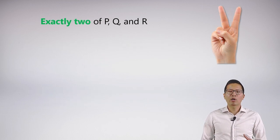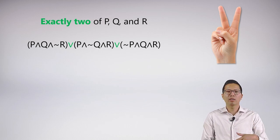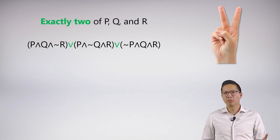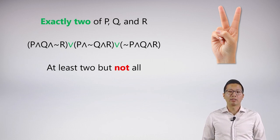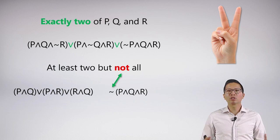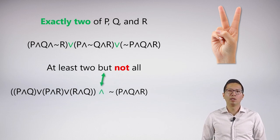For exactly two, we do the same thing. The explicit cases are: P and Q, or P and R, or Q and R — put ORs in between. We don't have to say 'and not all of them,' but you could. An interesting thing about exactly two is it also has a short, efficient symbolization: exactly two is just 'at least two, but not all.' We already know how to symbolize at least two. 'Not all' is just the negation of P and Q and R. And 'but' is the conjunction — so this is a perfectly acceptable symbolization of exactly two.